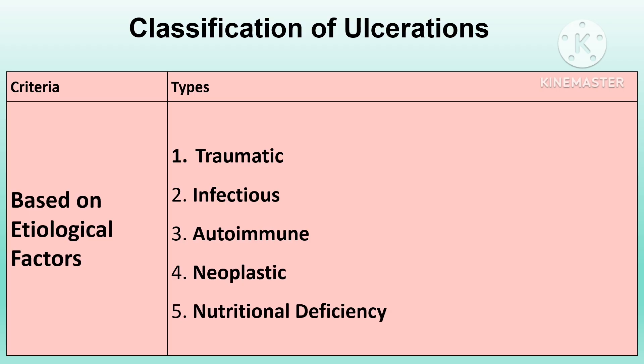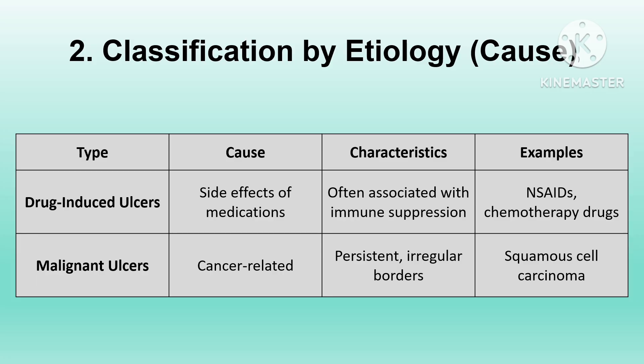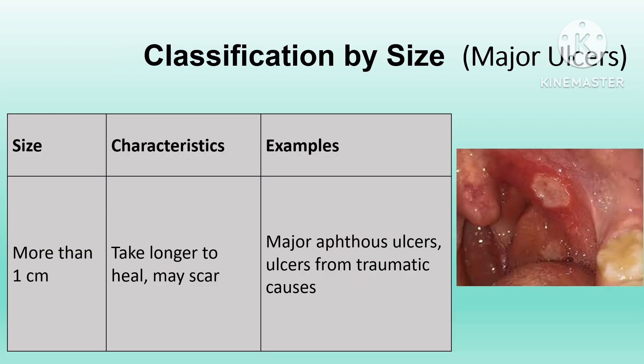Based on etiology, ulcerations can be classified as traumatic (mechanical, chemical, or thermal injury), infectious, autoimmune, neoplastic, and nutritional deficiency. Examples: traumatic ulcers may be due to ill-fitting dentures; pemphigus vulgaris is an autoimmune cause; squamous cell carcinoma is the most common neoplastic cause of non-healing ulcers in the oral cavity; and iron deficiency can also lead to ulceration in the mouth.